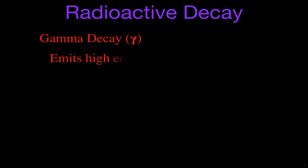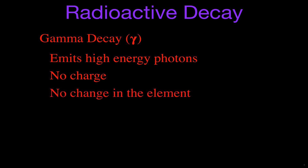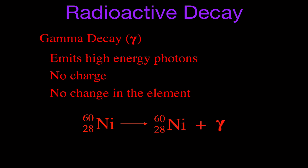The last one is gamma decay. Gamma is a little simpler because a gamma particle is not really a particle — it's just a high-energy photon. It has no charge, no mass, and so there's no change in the element. The nucleus is just shifting around and emitting some energy, but not really any particles. So nickel-60, when it undergoes gamma decay, you still get nickel-60 and some energy, written as the gamma symbol.